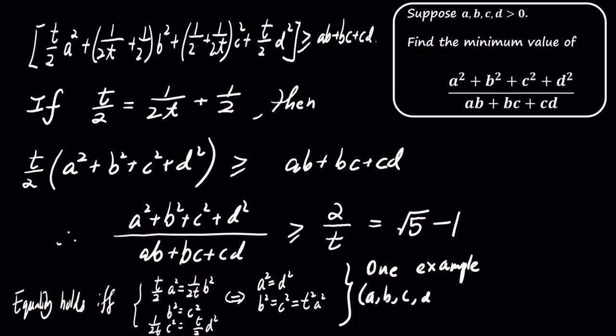A, B, C, and D are equal to 1, 3 plus the square root of 5 divided by 2, 3 plus the square root of 5 divided by 2, and 1, respectively.